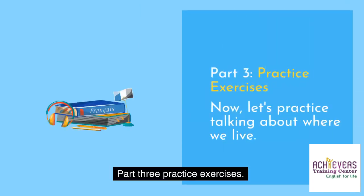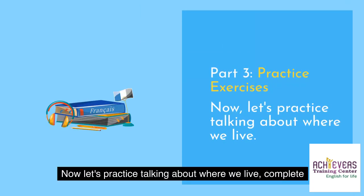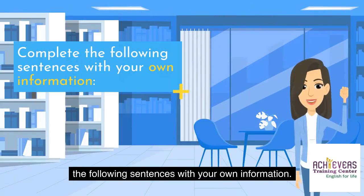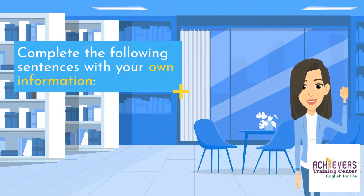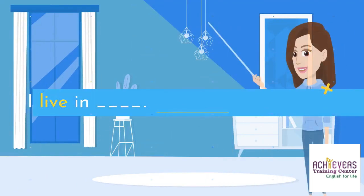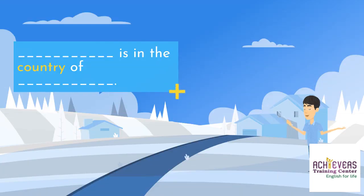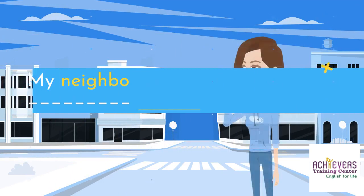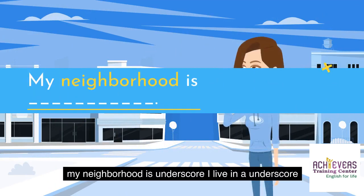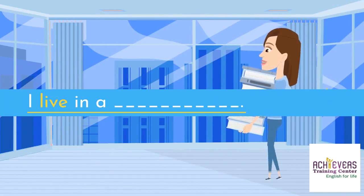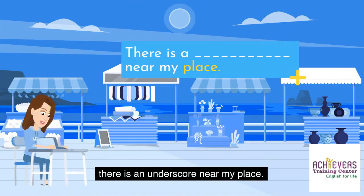Part 3: Practice Exercises. Now let's practice talking about where we live. Complete the following sentences with your own information: I live in an apartment building. Blank is in the country of blank. My neighborhood is blank. I live in a blank. There is a blank near my place.